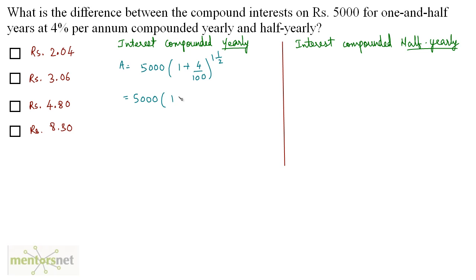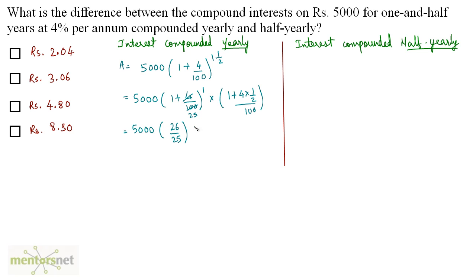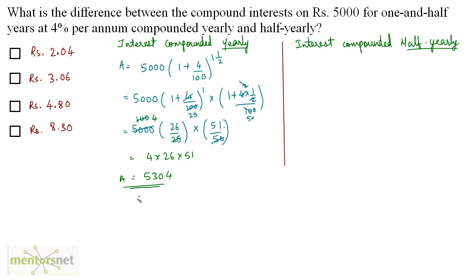For the yearly case, A = 5000 × (1 + 4/100)^1 × (1 + 4×(1/2)/100). Simplifying, 4/100 = 1/25, so we get 5000 × (26/25) × (1 + 2/100) = 5000 × (26/25) × (51/50). Solving this gives an amount of Rs. 5304, so the compound interest compounded yearly is Rs. 304.